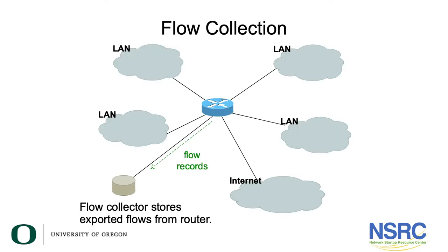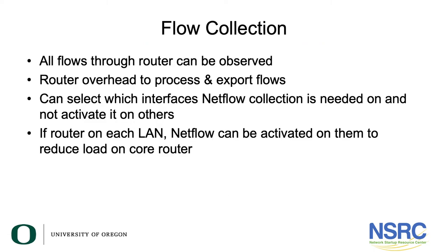The slide shows a possible setup for flow collection. We have the router in the middle of the campus with various LANs connected to it as well as our internet access. The collector is plugged in directly to the router, which exports flow records to it. All flows through the router can be observed, though there is router overhead to process and export these flows. We can select which interfaces NetFlow collection is enabled on, and if there's a separate router for each LAN, NetFlow can be activated on them to reduce the load on the core router.